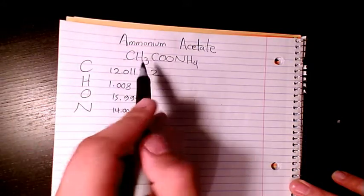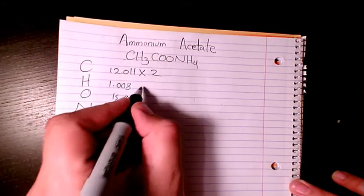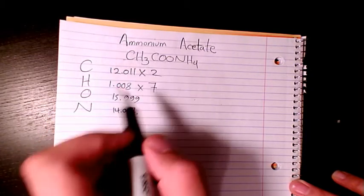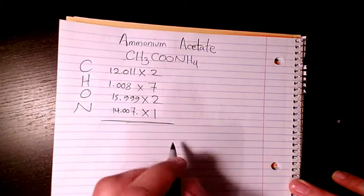Hydrogen - how many do we have? Three here and four here, so that's seven atoms of hydrogen. We have two atoms of oxygen and one atom of nitrogen.